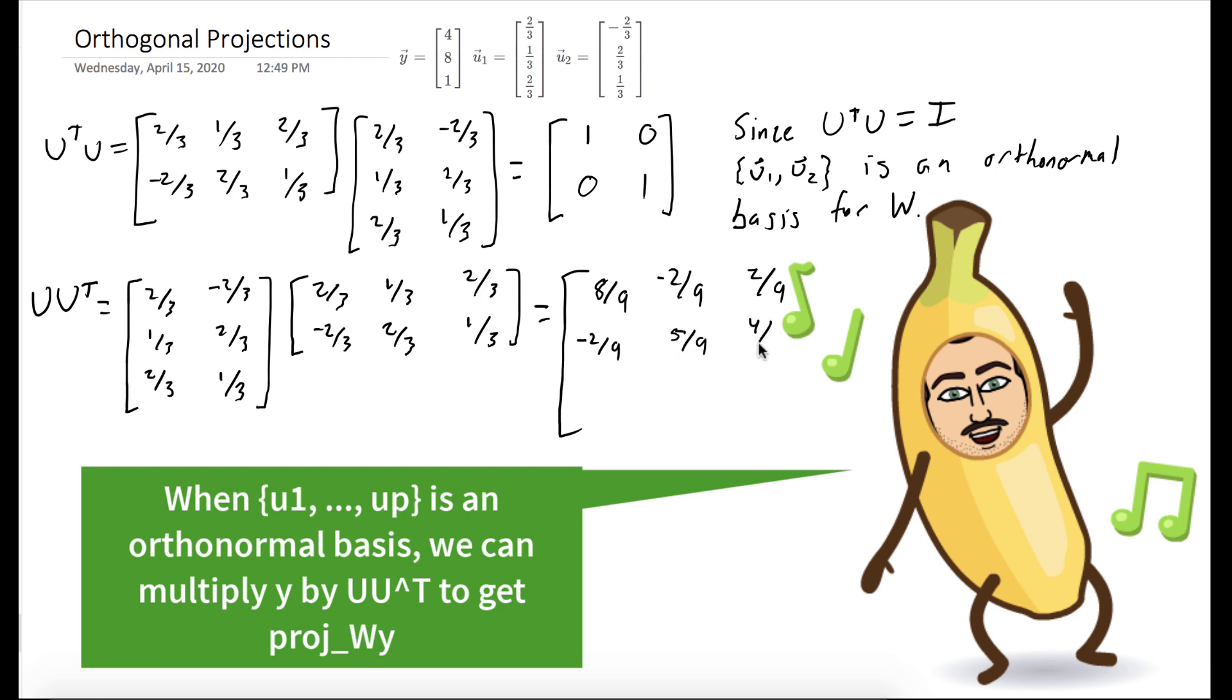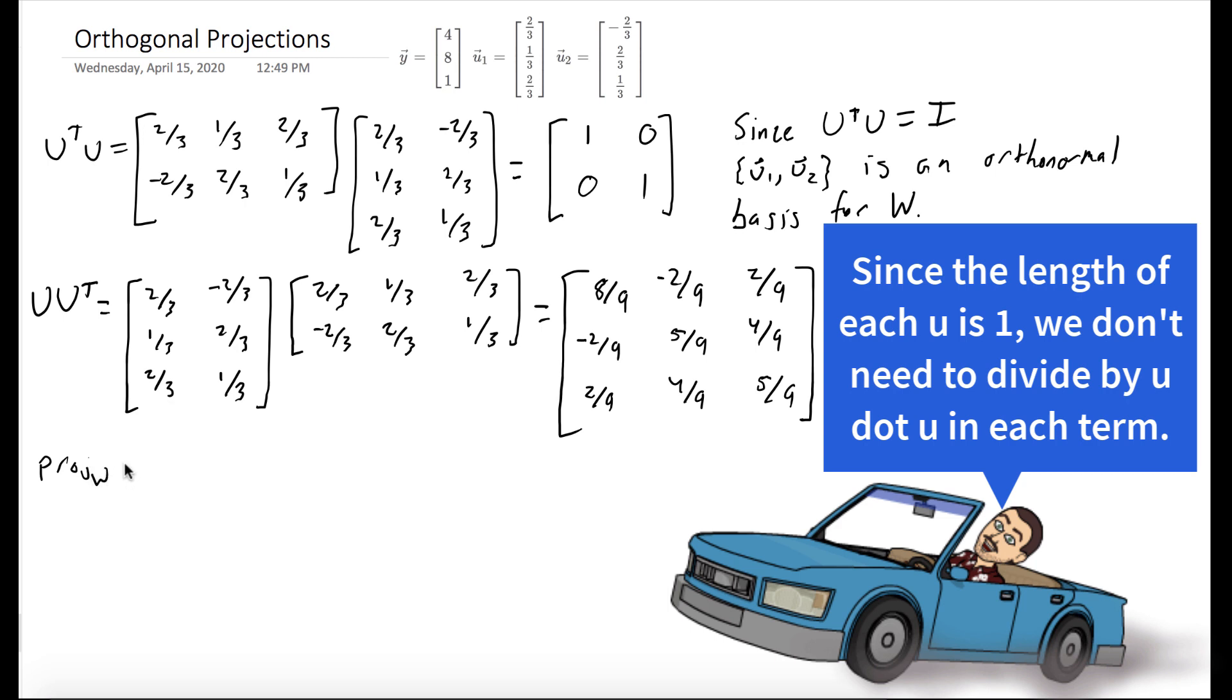5/9, 4/9, 2/9, 4/9, 5/9. Now, notice that our matrix is its own transpose, and that should always be the case.